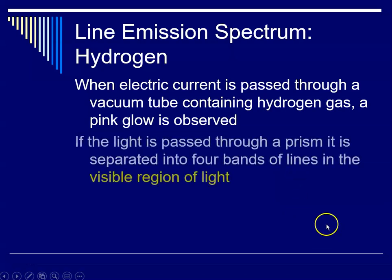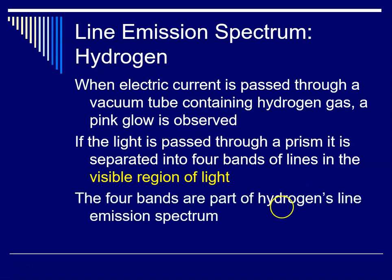And if the light is then passed through a prism or a spectroscope, it separates out into four bands of lines in the visible region of light. And these four bands are part of what's known as hydrogen's line emission spectrum.